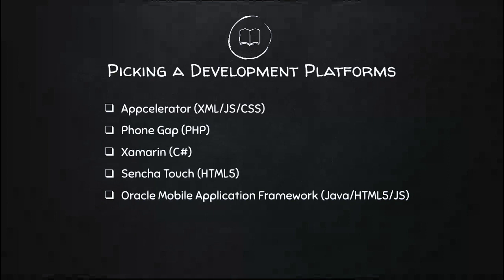The last one I've used on and off is the Oracle Mobile Application Framework, built into Oracle JDeveloper — I believe they now even have a plug-in for NetBeans. It uses Java, HTML, and JavaScript to build the mobile application. What all these have in common is they're all written in their specific languages, but they deploy to multiple devices. AppCelerator currently supports iOS, iPad, Windows, and Android. PhoneGap is iOS and Android. Xamarin is all of them. Sencha Touch is iOS and Android. Oracle Mobile Application Framework is all of the above.